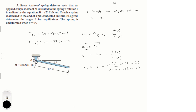When you plug this into your calculator with the calculator in radians mode, you get that a_1 is equal to 0.8338.